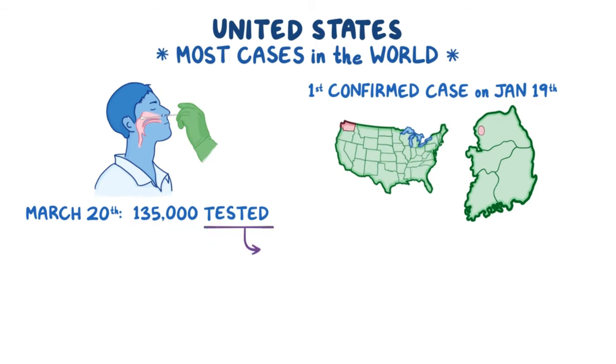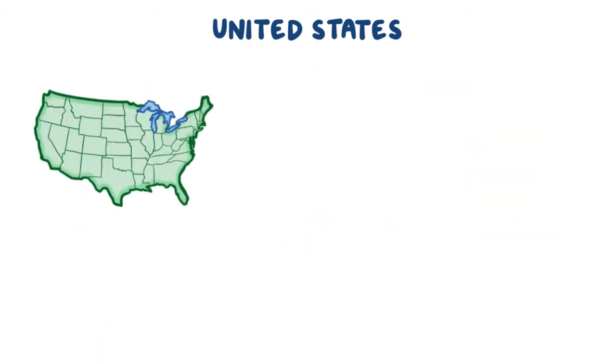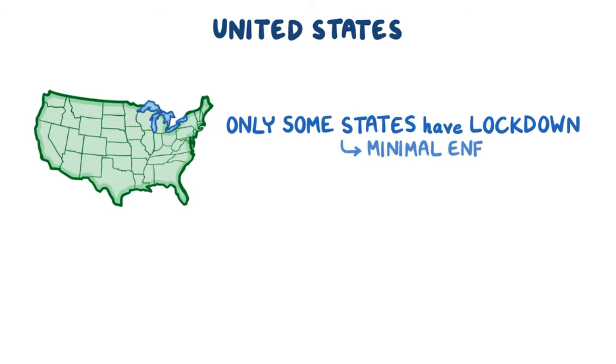Unfortunately, the US data doesn't include testing done by private companies, but as of late March, testing has been well documented to be woefully inadequate in most parts of the US, requiring days to get a result or being unavailable altogether. In addition to the absence of widespread testing to identify which individuals need to be isolated, only some United States have mandated a lockdown, and even when it's applied, there's been minimal enforcement.